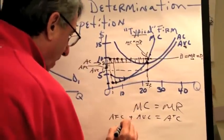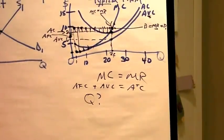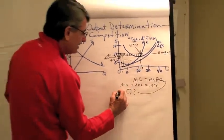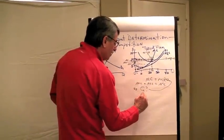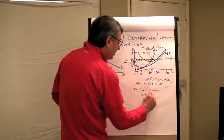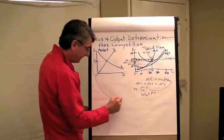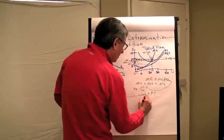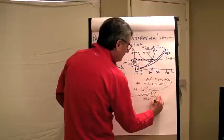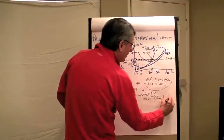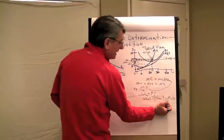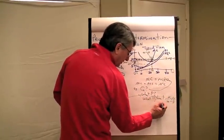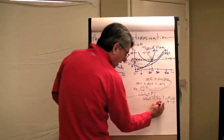When we ask what quantity should this firm produce in order to maximize its profits or minimize its losses, the answer is to produce the quantity where marginal revenue equals marginal cost — in this case, 22 units. The price comes from the market; this firm is a price taker with no choice about that. Profit per unit has a formula: price minus average cost. So in this case the price is $10, the average cost is $8, which means the profit per unit is $2 per unit.